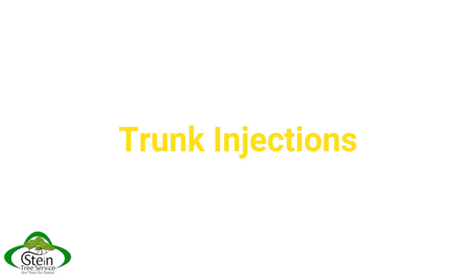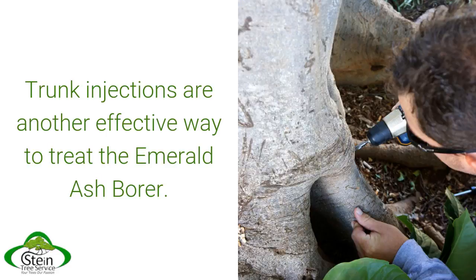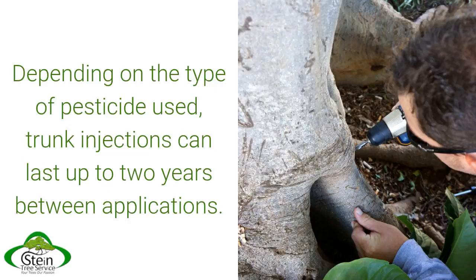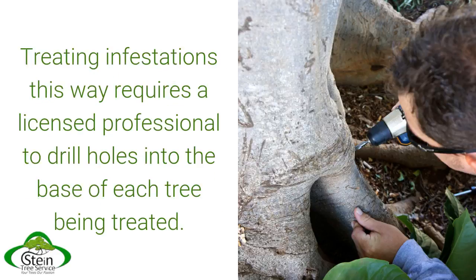Trunk injections are another effective way to treat the emerald ash borer. Depending on the type of pesticide used, trunk injections can last up to two years between applications. Treating infestations this way requires a licensed professional to drill holes into the base of each tree being treated.